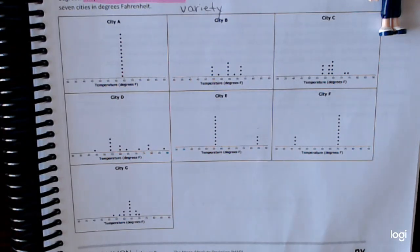And the next question asks, wants to know which distribution seems to have the most variability. Now, you might have more than one answer. And if you do, tell me the cities that you chose and then explain why you think they have the most variety or variability.